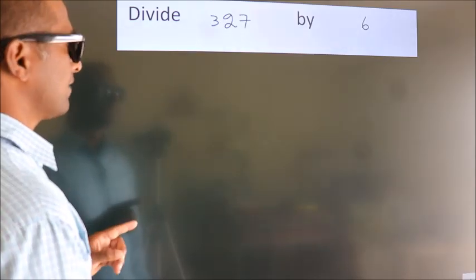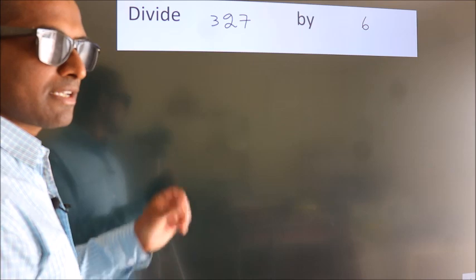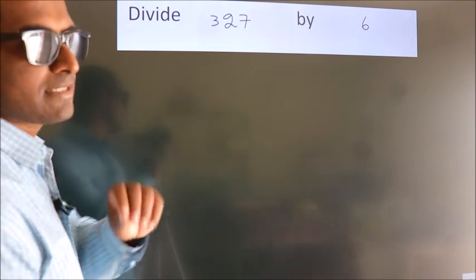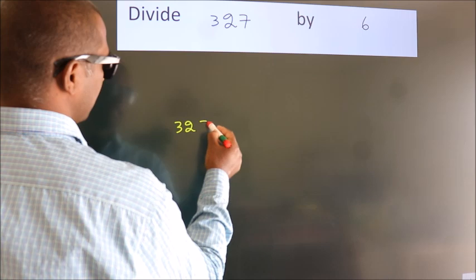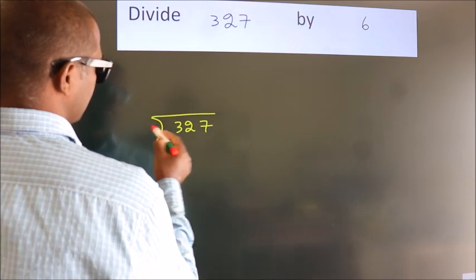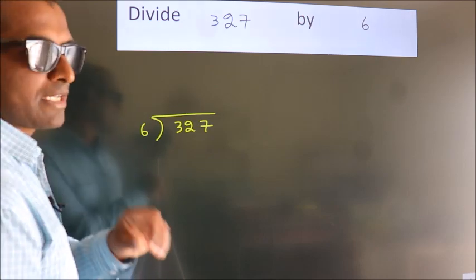Divide 327 by 6. To do this division, we should frame it in this way. 327 here, 6 here. This is your step 1.